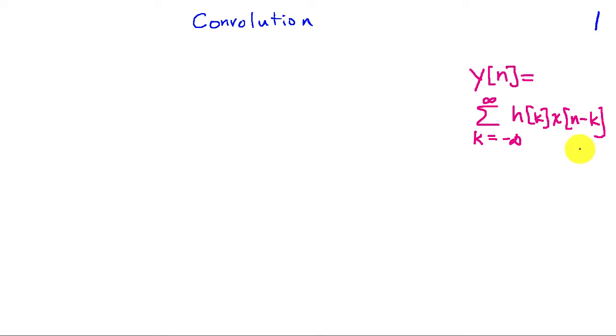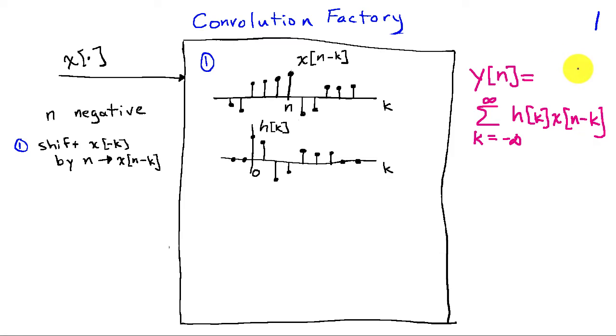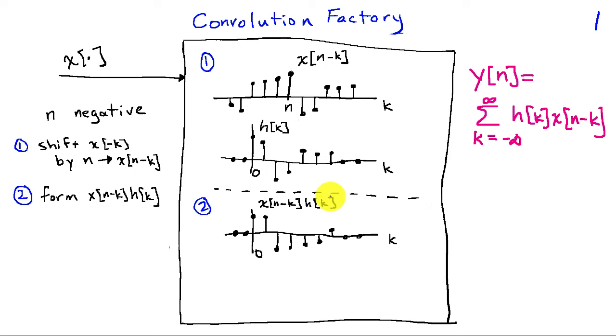We've previously looked at an approach for evaluating this convolution sum. Basically, we're going to graph h of k, and then we're going to form x of n minus k as the input to this convolution factory. So we take x of minus k, we shift it by n to get x of n minus k.